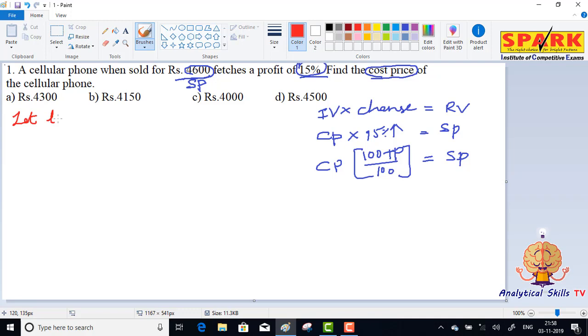Let the cost price of phone be x rupees. So selling price is equal to 4600, and profit percent is given as 15%. Through the formula, selling price equals...